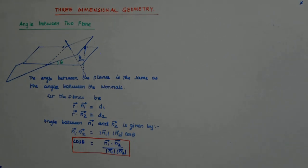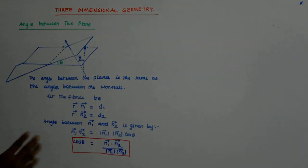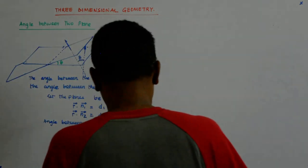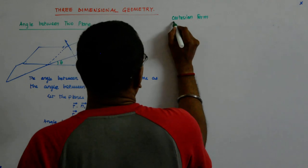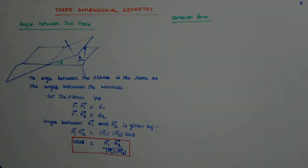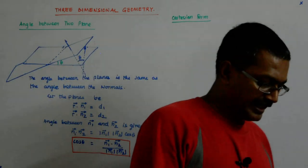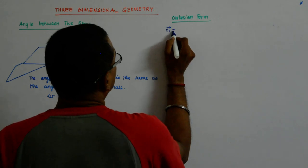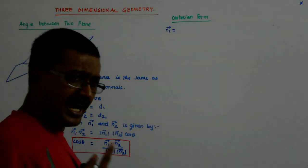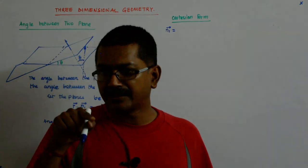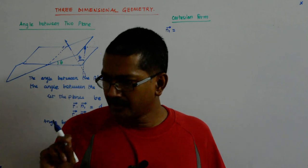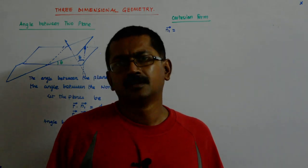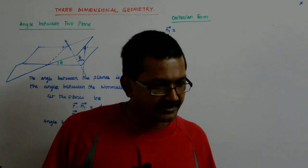Okay, so now what? I get cos theta is equal to this. Now how do I convert it into a Cartesian form? n1, this is my Cartesian form. How do I convert it into the Cartesian form? My n1 can be given like this. See, n1, had it been a unit vector, it would have been given as l1 i cap plus m1 j cap plus n1 k cap. This is not a unit vector, so it will be direction ratios.